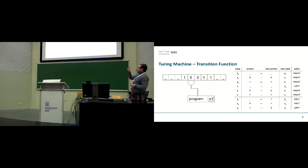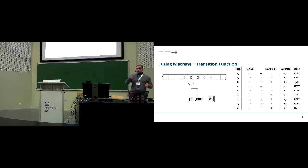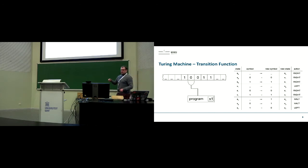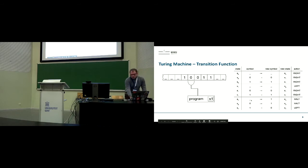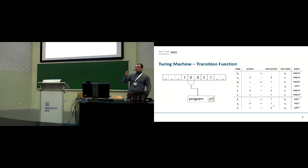State zero is for skipping blank symbols to find the start of the number. State one is for finding the end of the number — going right until you reach it. The last state handles incrementing: you go back left, and either add a zero to the beginning when you've gone all the way, or find a zero, change it to a one, and that increments the number by one.